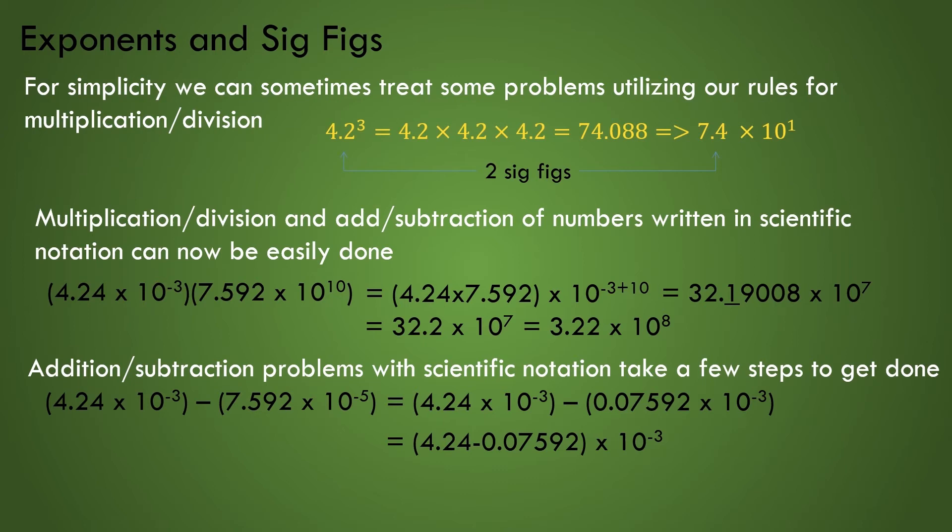Now since both numbers are of the same power of minus 3, we can factor out the 10 to the power of minus 3 and work on the subtraction, 4.24 minus 0.07592 directly. Now we've obtained from that subtraction the value 4.16408. We underline the 6 because we know that the 4.24 value is the least precise value in the parentheses. Finally, we round off and make sure our result is in the proper scientific notation form, obtaining a value 4.16 times 10 to the minus 3, having 3 sig figs.